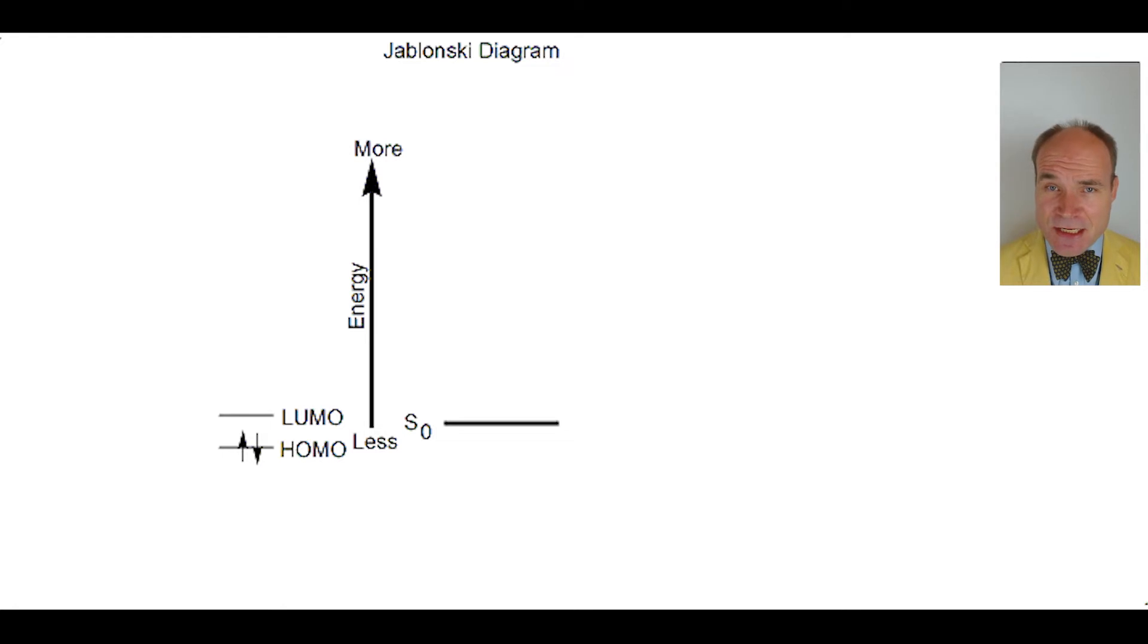The next highest energy level is the first excited state, S, a singlet, one. The same two electrons remain of opposite spin states, but one of them has received energy to move from HOMO to LUMO.